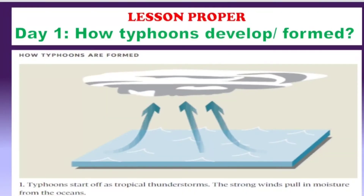Let's proceed to Day 1: how typhoons develop. I'll be showing some pictures to guide us and provide a clearer understanding. Typhoons start off as tropical thunderstorms — the strong winds pull in moisture from the ocean.